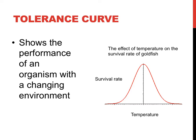This tolerance curve shows how water temperature might affect the survival rate of a goldfish. At a water temperature of 19 degrees Celsius, survival rate might be as high as 90% yearly. If the temperature were to drop as low as 5 degrees Celsius, or rise to 35 degrees Celsius, survival rates may taper off quickly.